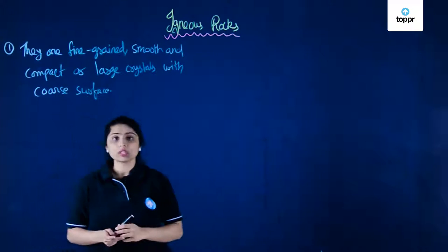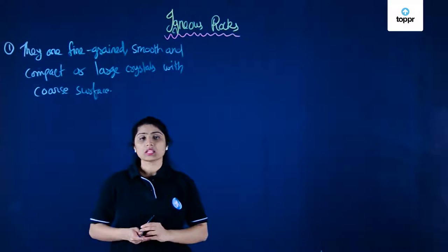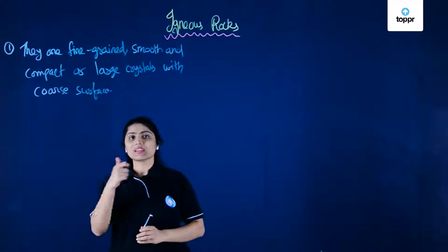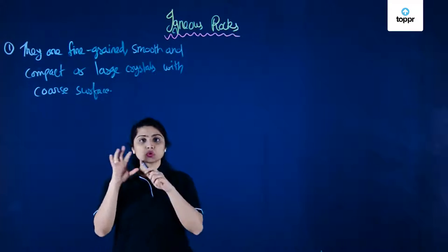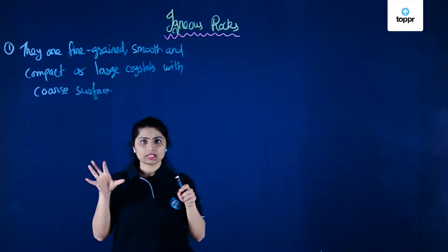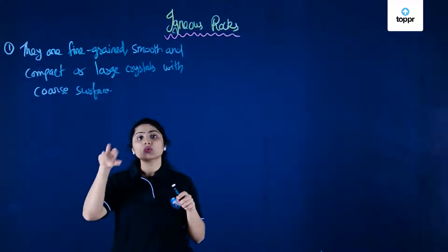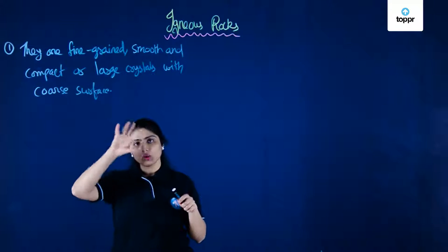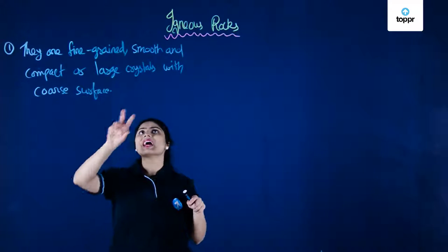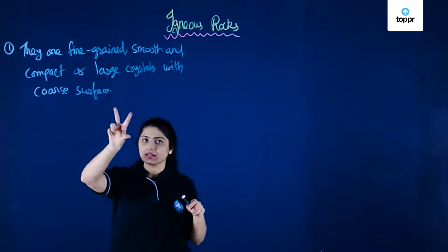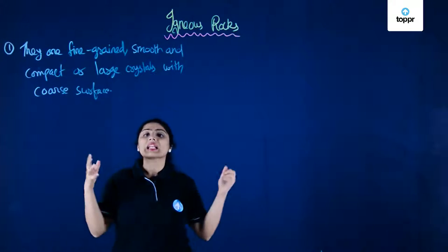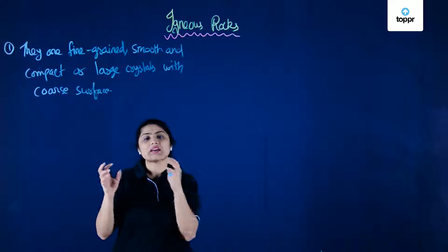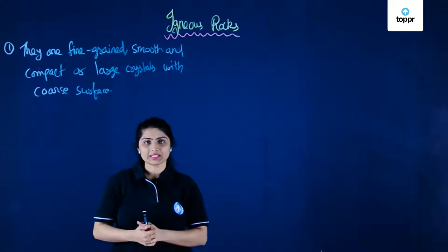We know that there are two types of igneous rocks: intrusive and extrusive. The extrusive ones, which are formed by the cooling of lava on the surface, are fine-grained. But the intrusive ones are large crystals having a coarse surface.